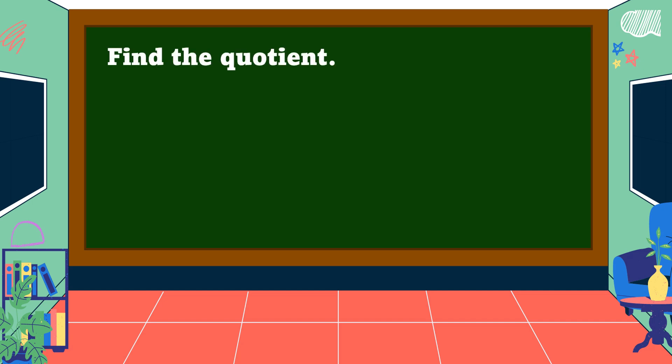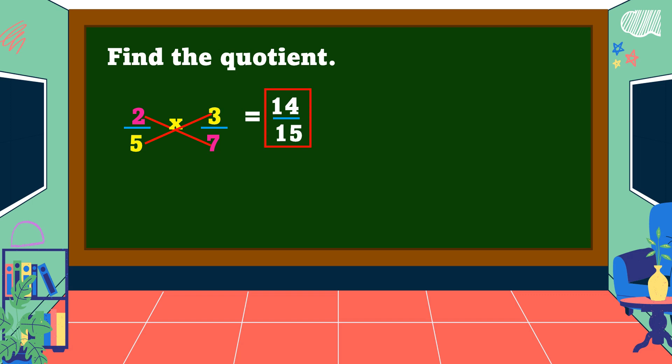Another example. Find the quotient of 2 fifth and 3 seventh. This time, instead of the reciprocal method, we're going to use cross multiplication. We multiply the numerator of the first fraction by the denominator of the second fraction as our numerator, and the denominator of the first fraction by the numerator of the second fraction as our denominator. So 2 times 7 is equal to 14, over 5 times 3 is equal to 15. 14 over 15 is in the lowest term. Therefore, this is our final answer.